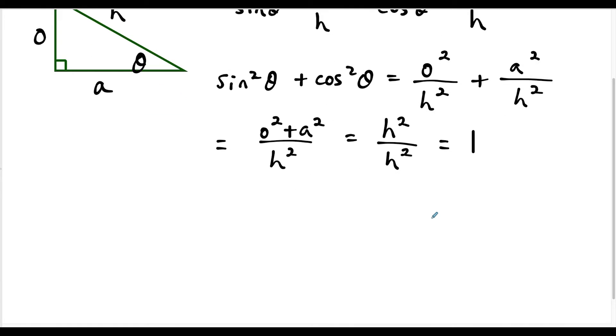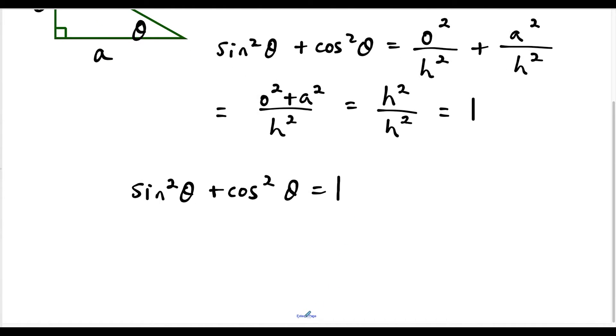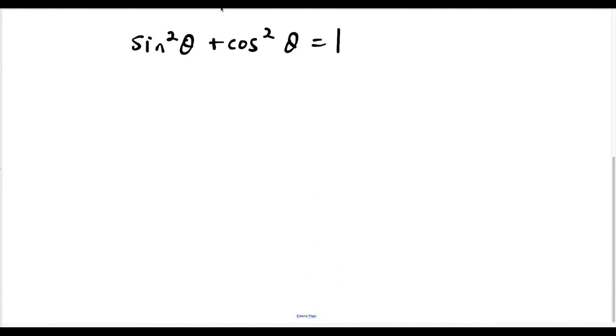So what this tells us, this gives us the first and main formula here, that sine squared theta plus cosine squared theta is always equal to one. And now what we could do with this, so let's take a look at the other formulas.